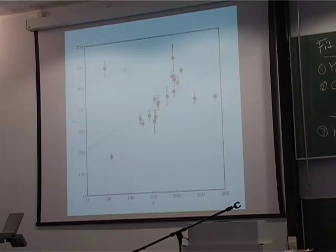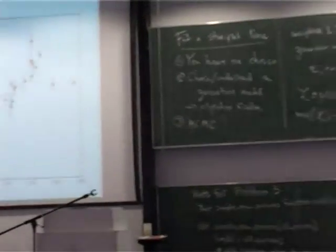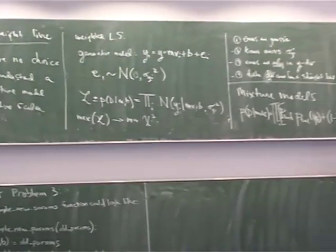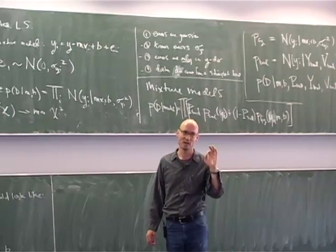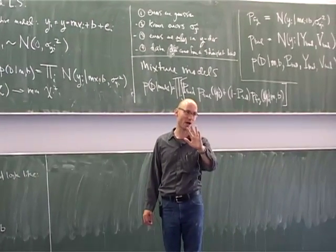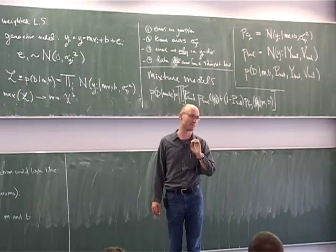Now, in the end, all I care about is M and B. So that means I want to marginalize, not slice. I want to marginalize my output and just look at the M and B distributions.